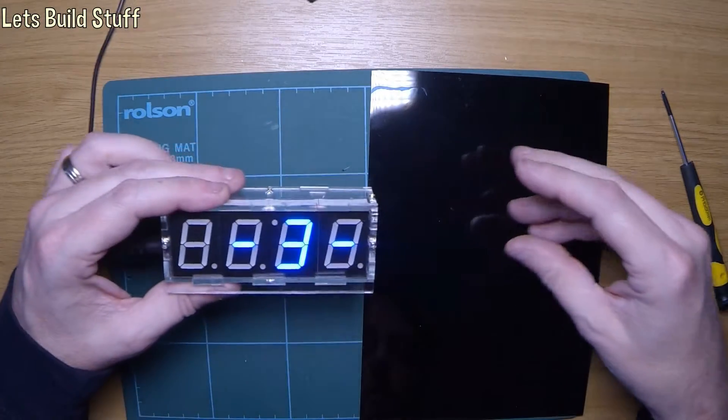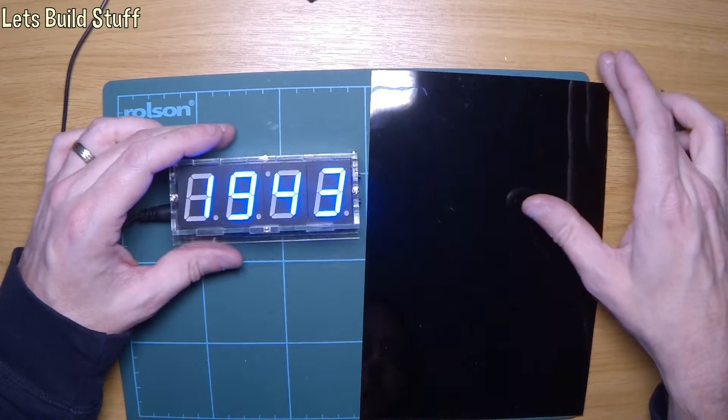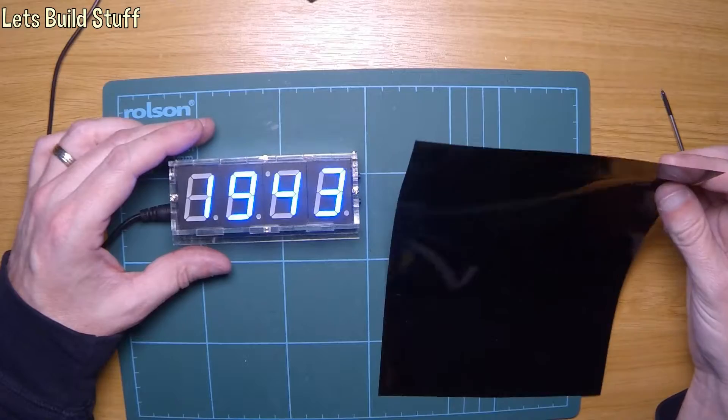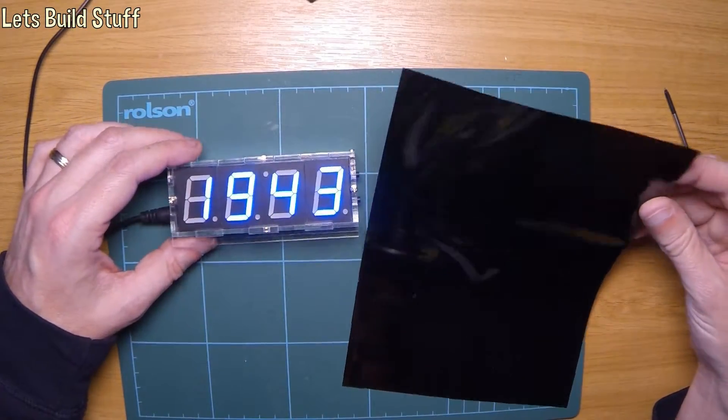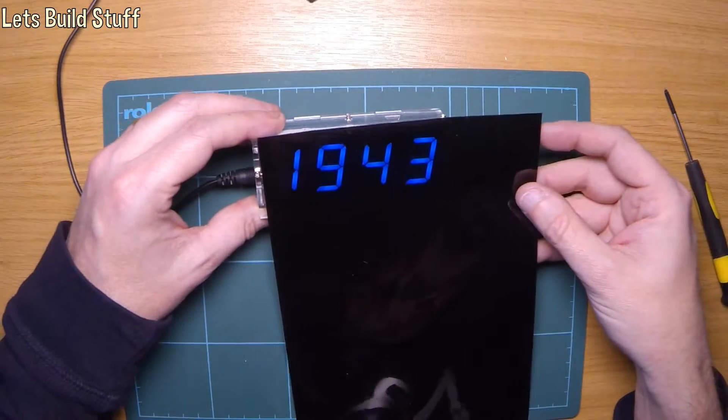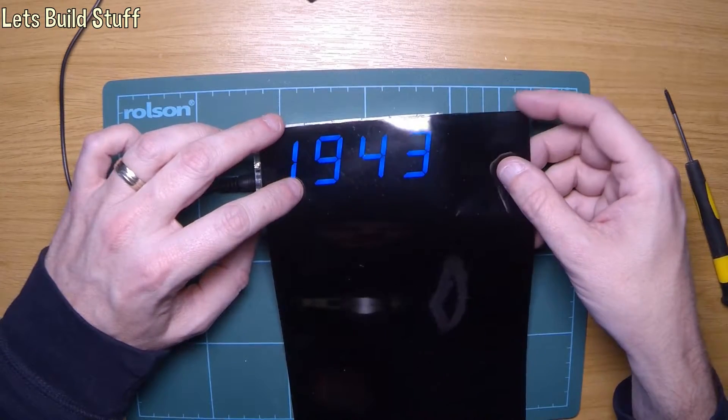So what I've got is some limo black tinting from eBay - I think it was 99p for a sample. Obviously that's quite a bit bigger than the clock, so I can actually do quite a few of these. I've got four of these clocks I can do.